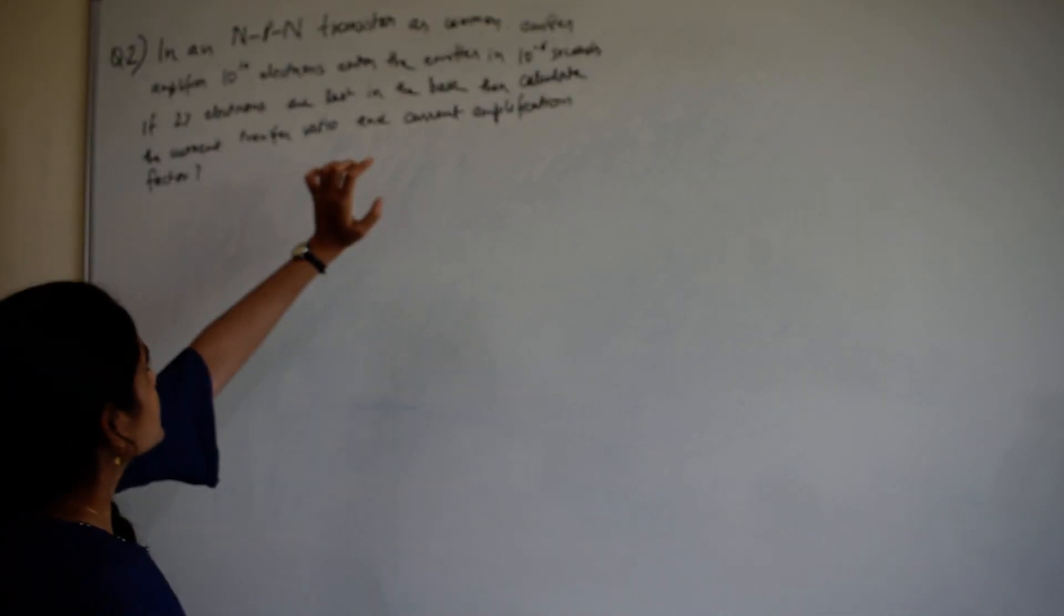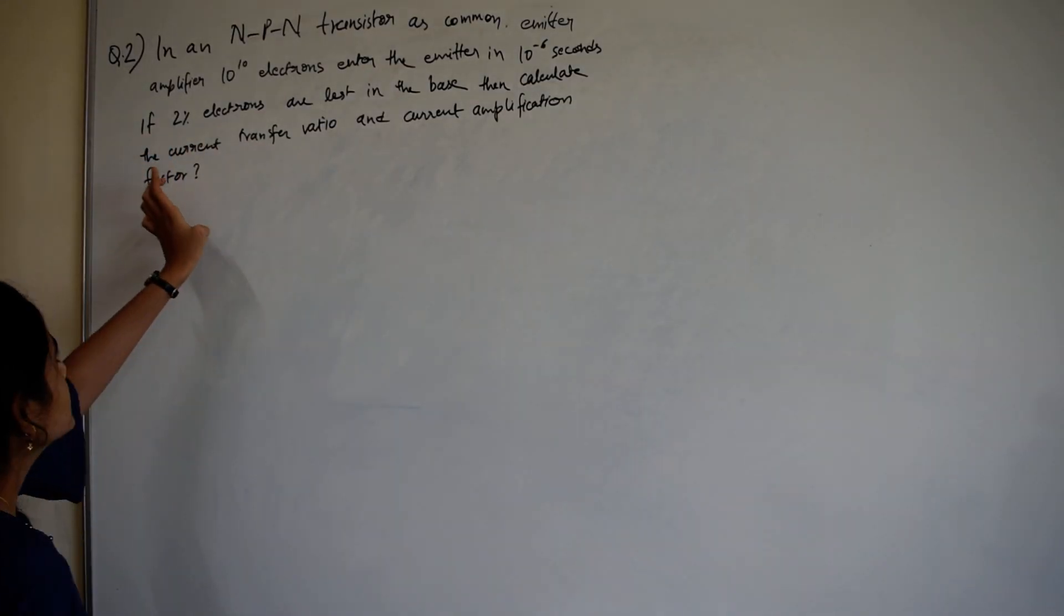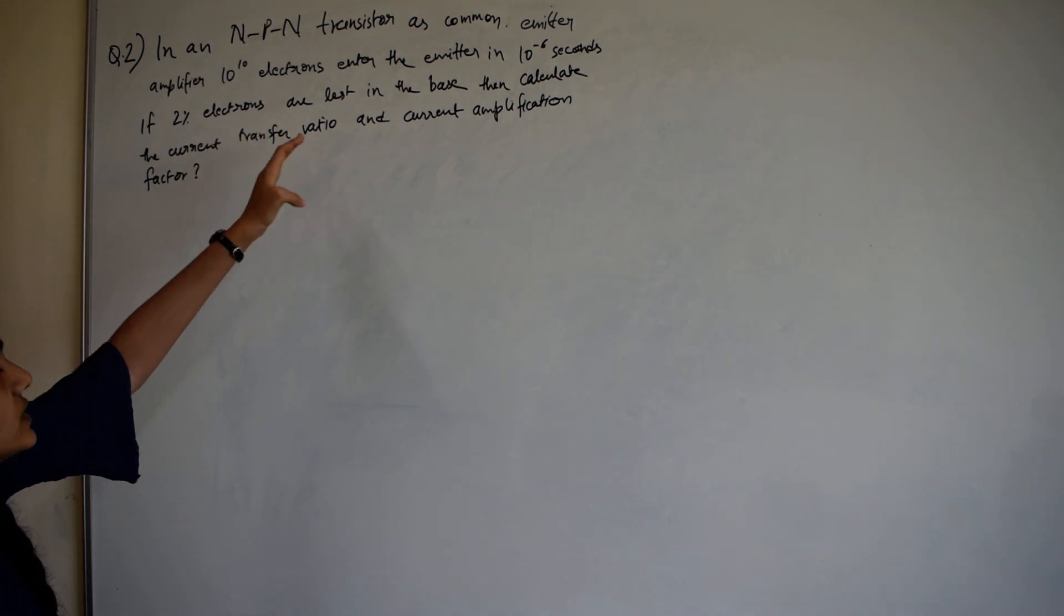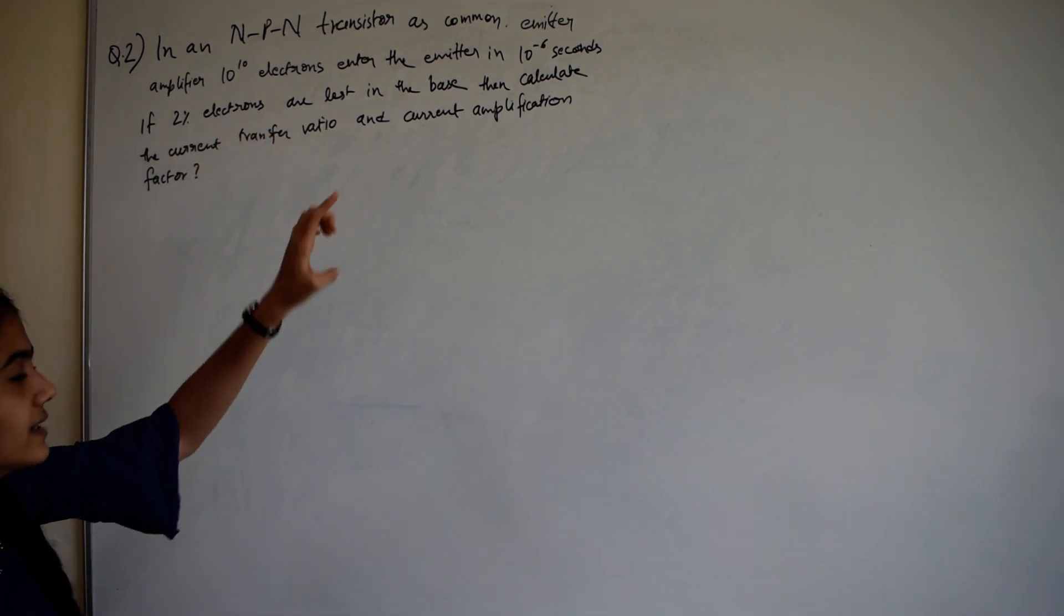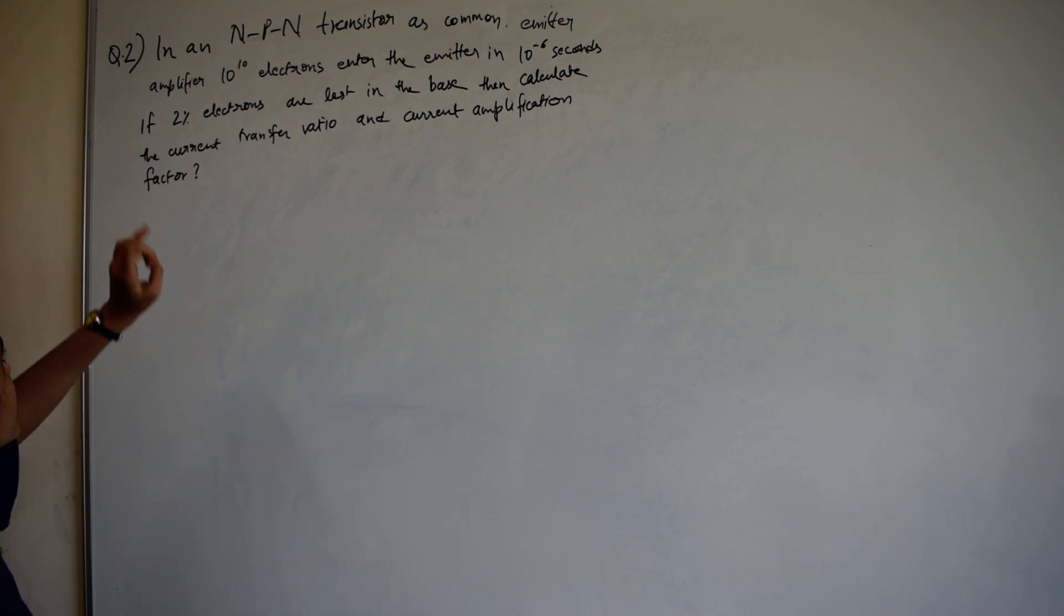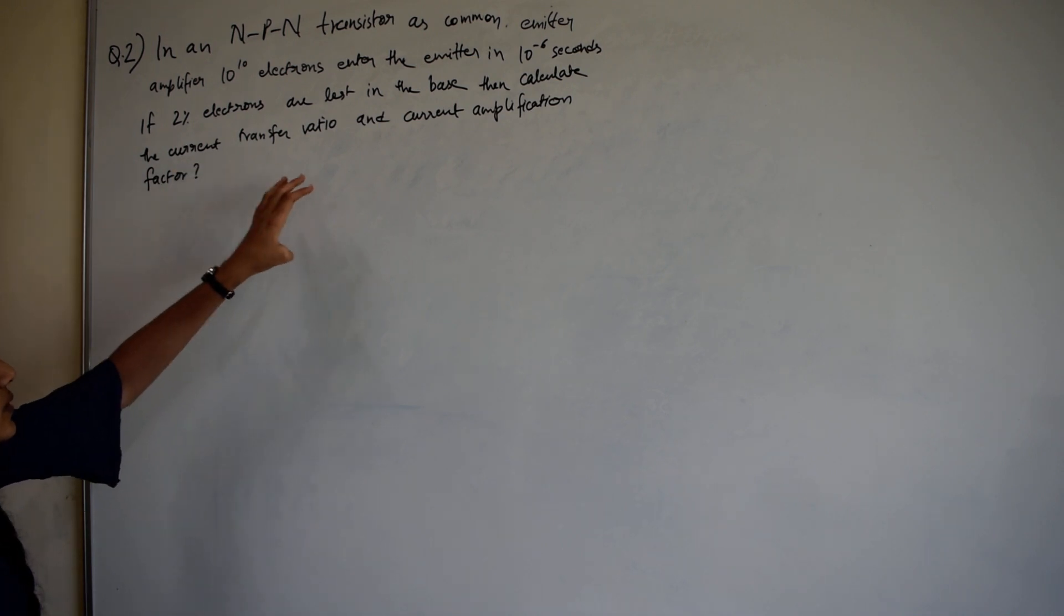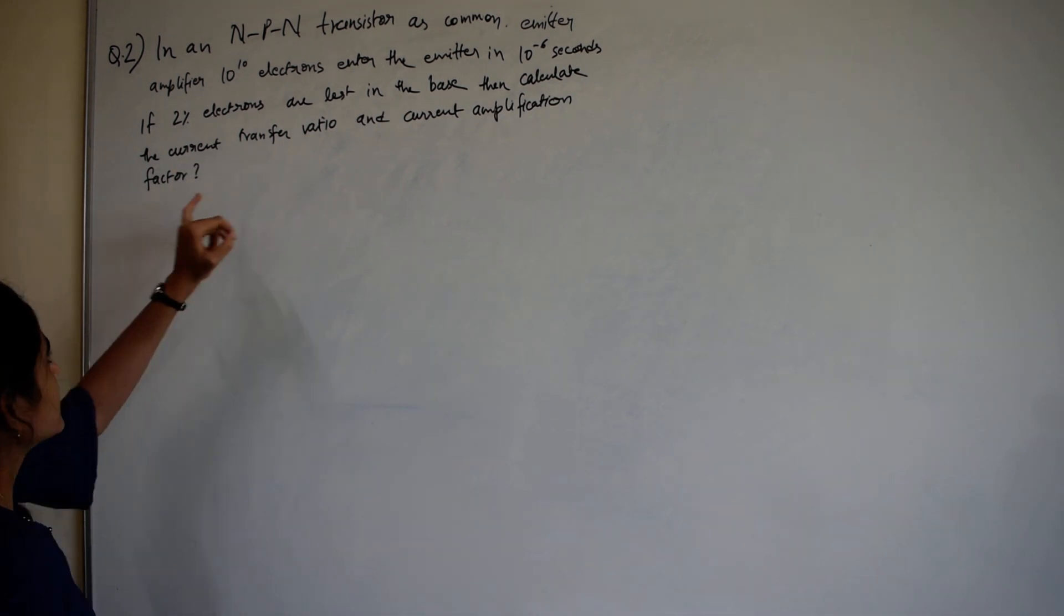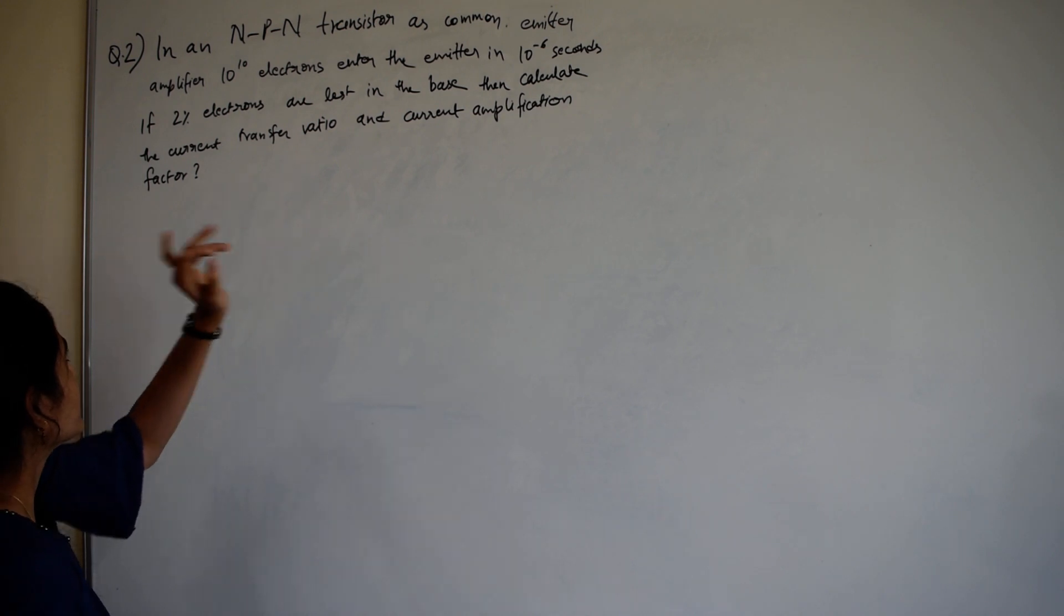In an NPN transistor as a common emitter amplifier, 10 raised to 10 electrons enter the emitter in 10 raised to minus 6 seconds. If 2% electrons are lost in the base, then calculate current transfer ratio and current amplification factor.